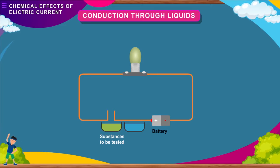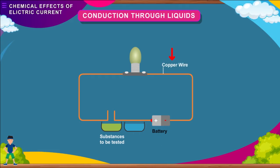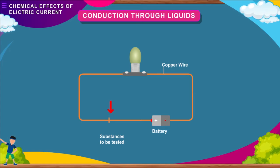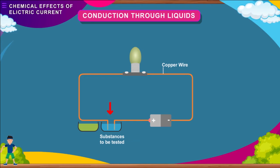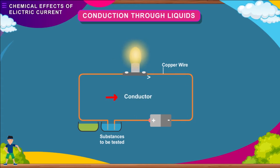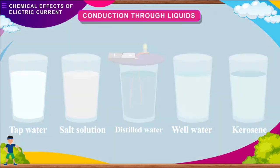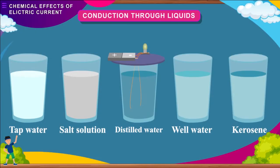Make an electric circuit consisting of a cell and a bulb connected through copper wire as shown in the figure. Touch the free ends of the wire together for a fraction of a second; if the bulb glows, your tester is ready and working. To test whether a given substance is a conductor or insulator, connect it to the two free ends of the conducting wire. If the bulb glows, the substance is a conductor; if it does not glow, the substance is an insulator.